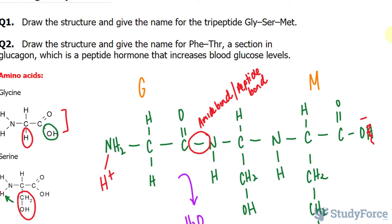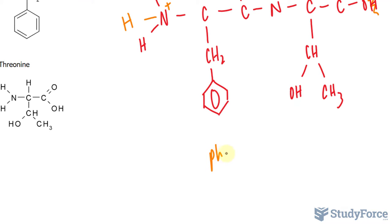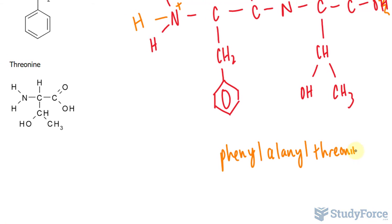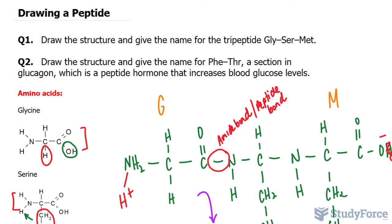And let's see, we had to give the name of it. So we would write down phenylalanine. And there you have it, a quick example on how to draw and name peptides.